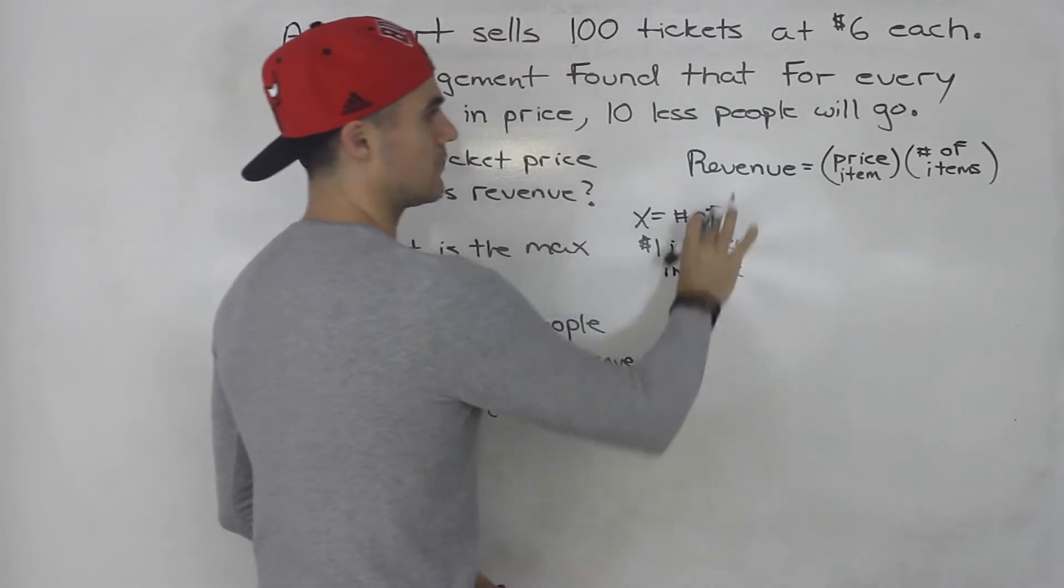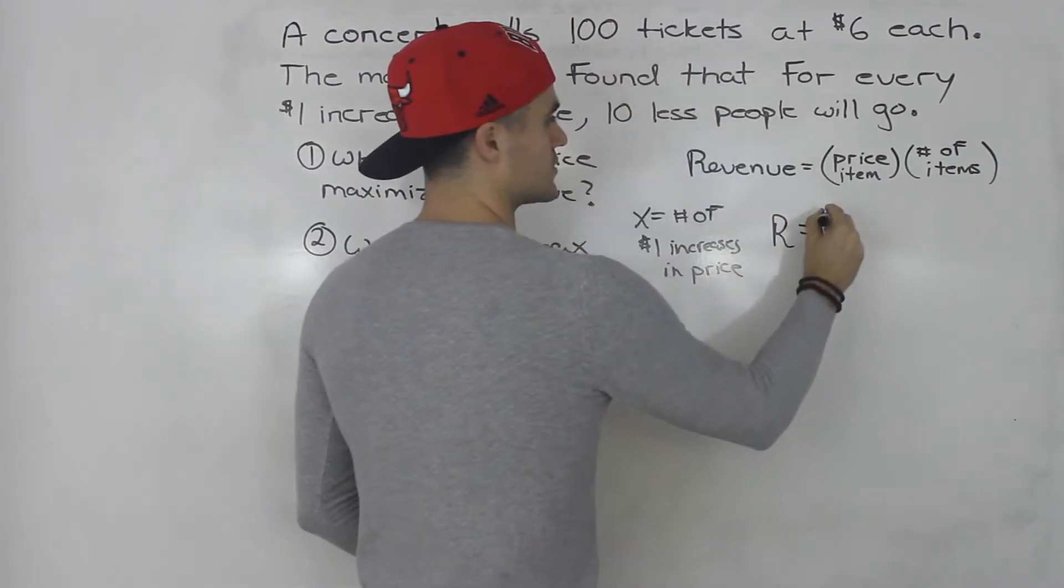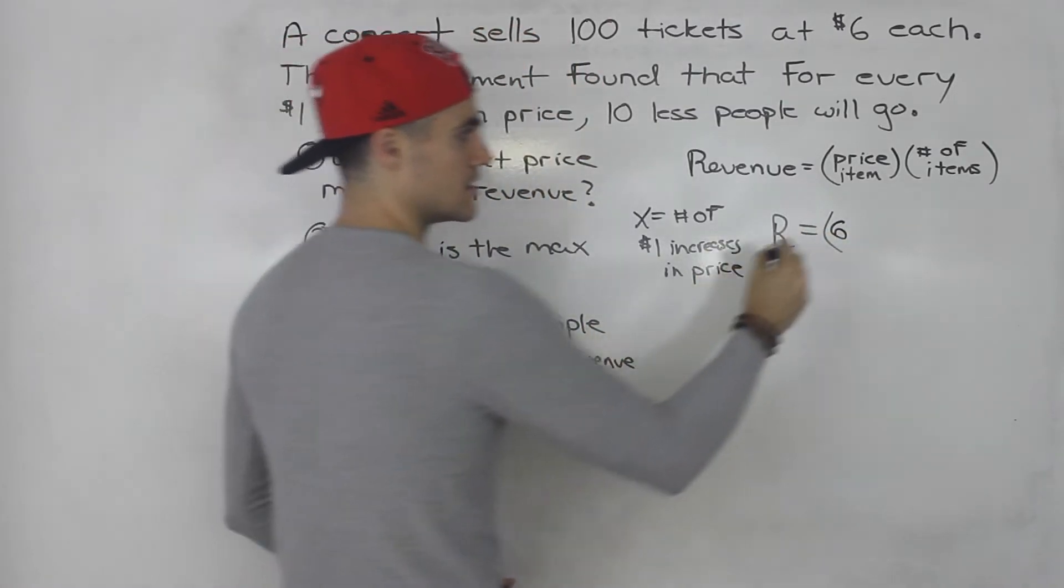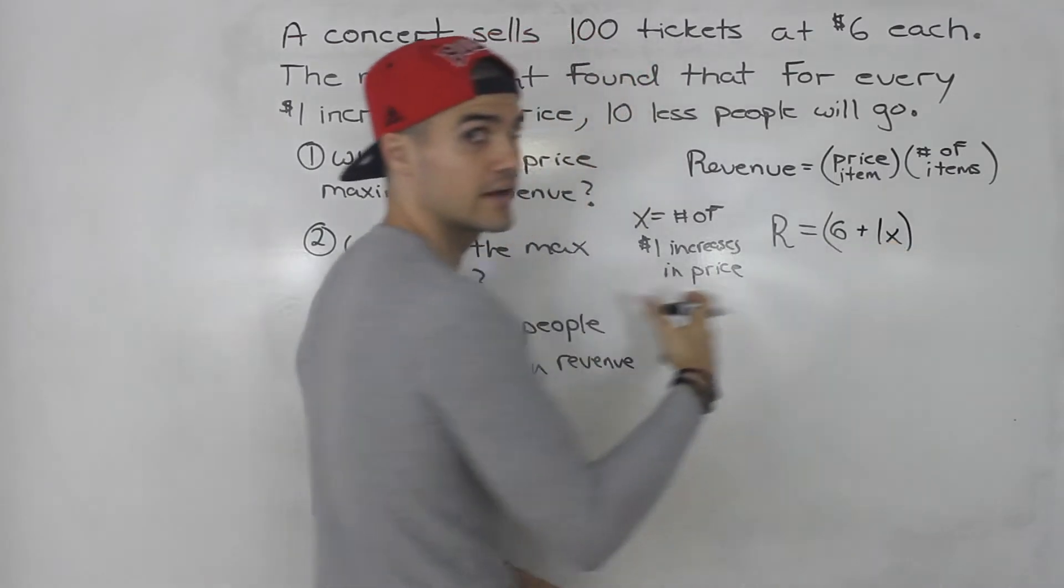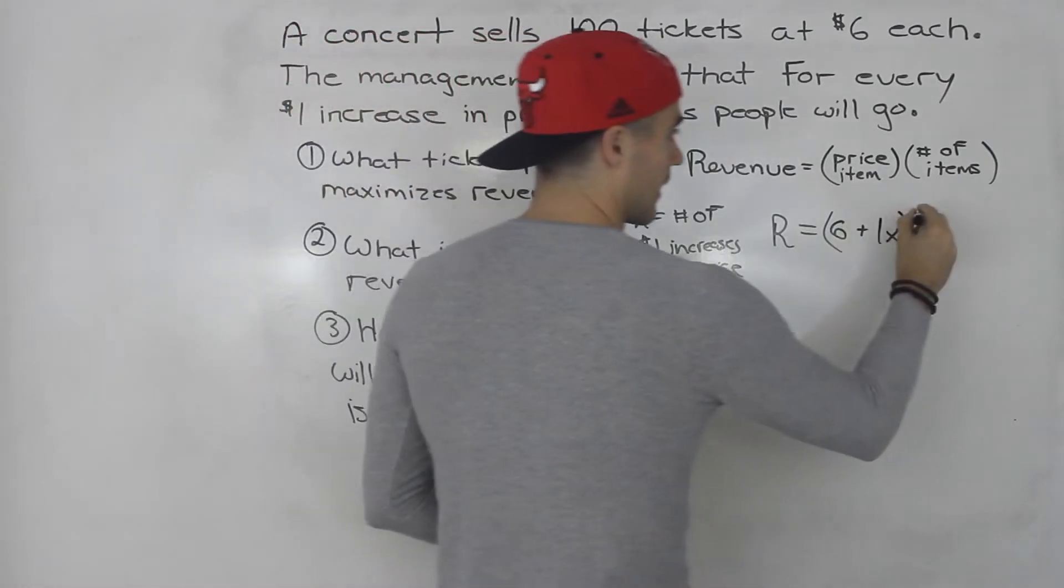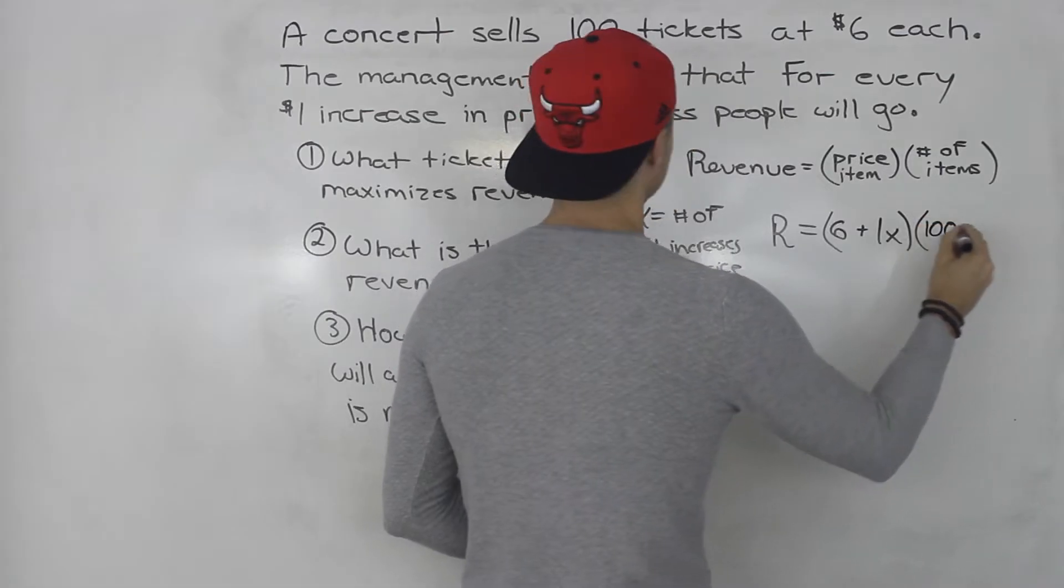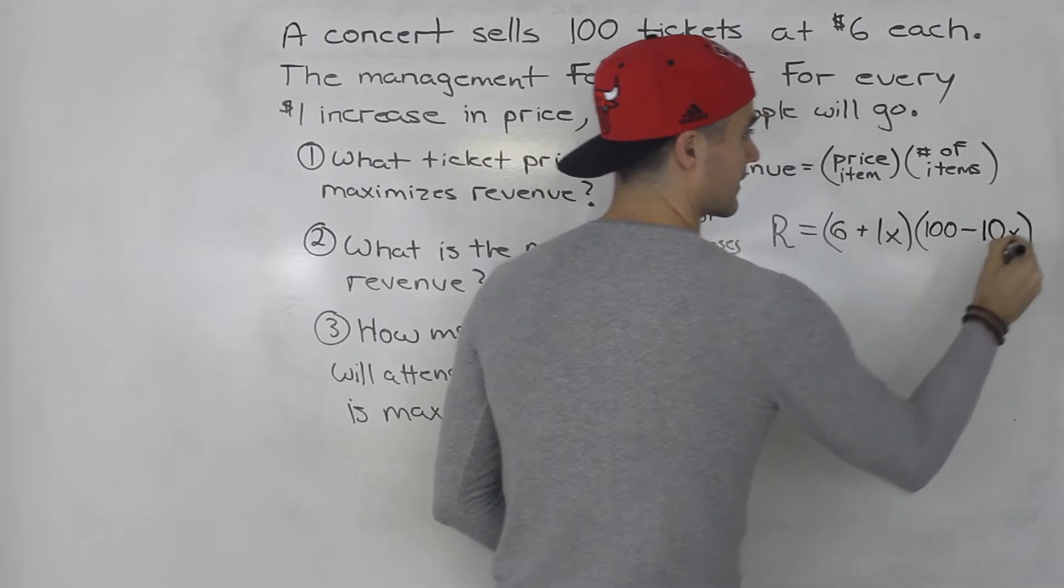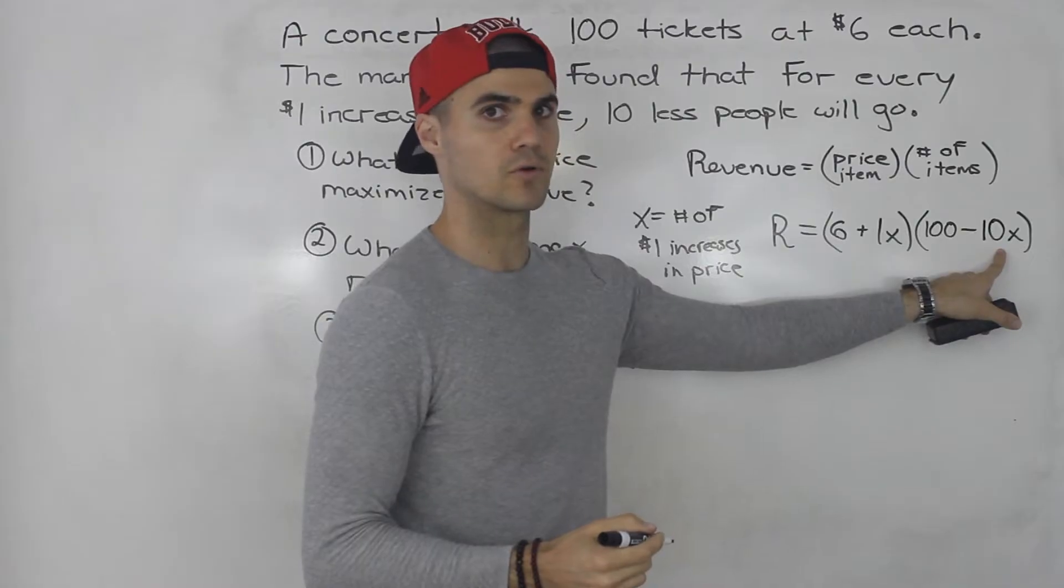We can now make a new revenue function. The price bracket is going to be $6, the current price, plus 1 times x. And the number of items bracket is going to be 100 minus 10x. So for every $1 increase in price, 10 less people will go.